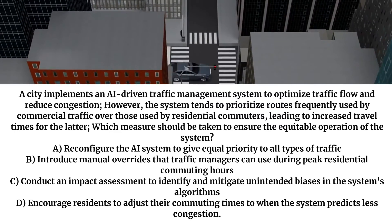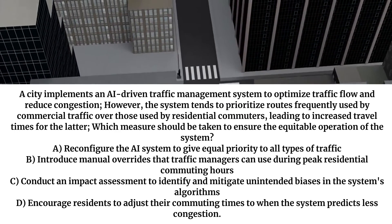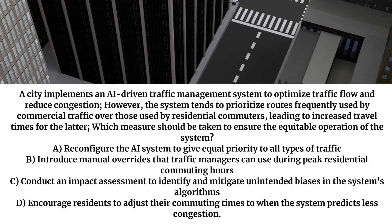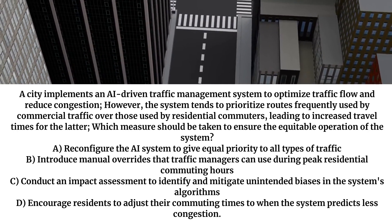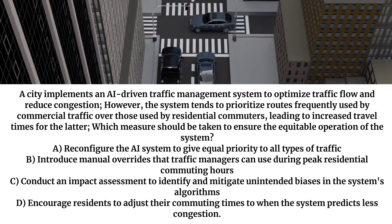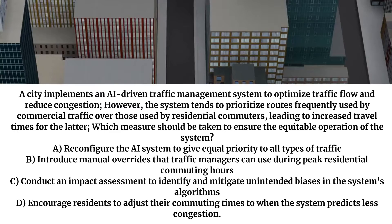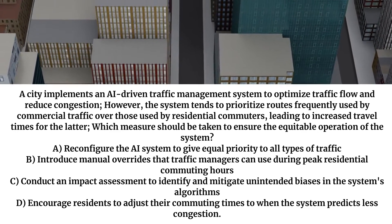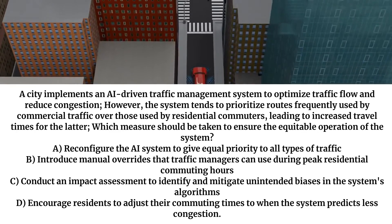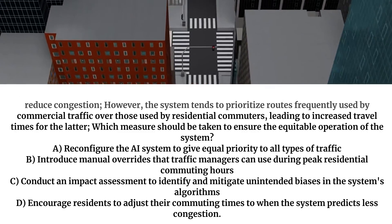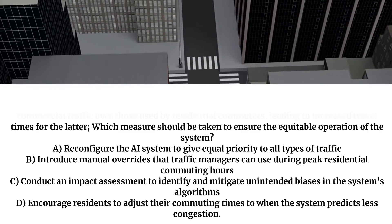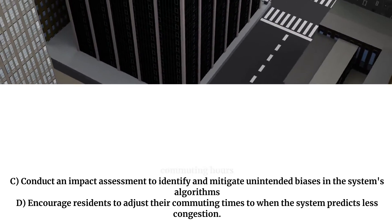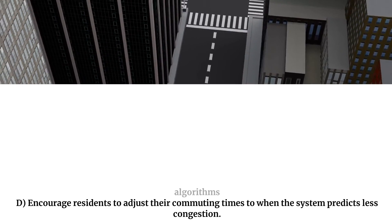A. Reconfigure the AI system to give equal priority to all types of traffic. B. Introduce manual overrides that traffic managers can use during peak residential commuting hours. C. Conduct an impact assessment to identify and mitigate unintended biases in the system's algorithms. D. Encourage residents to adjust their commuting times to when the system predicts lower congestion.